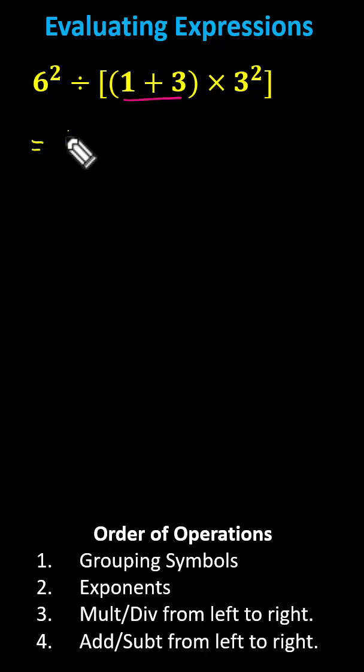We now have 6 squared divided by the quantity 4 times 3 squared. Still working inside the grouping symbols, now the brackets.